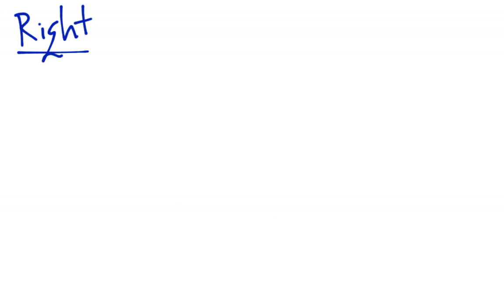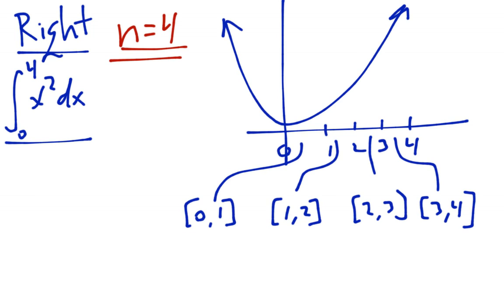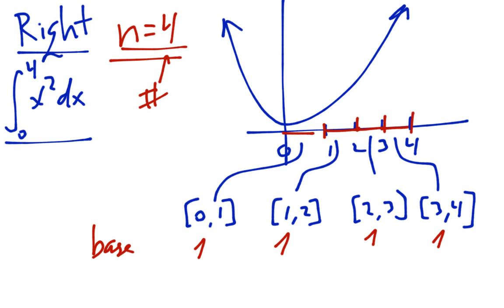Same example, but this time we're going to use a right Riemann sum. Exact same picture, exact same integral, exact same intervals, and we're using n equals 4 rectangles. The base of each rectangle is 1, just as before, because the length of each interval is 1. To find the height, instead of using the left side like last time, because it's a right sum, I'm going to use the right-hand side for each of my intervals.